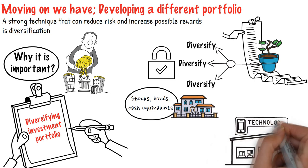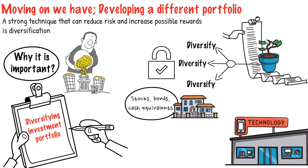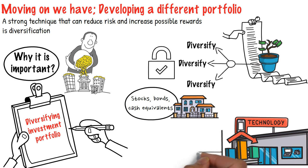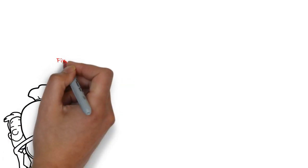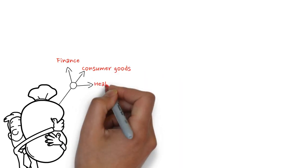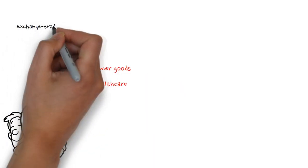Stocks, bonds, cash equivalents, and alternatives like real estate or commodities are among the primary asset groups. Each type has distinctive qualities and responds to market situations in a different way. If, for instance, all of your holdings are in technology stocks and the industry as a whole has a downturn, your portfolio may see significant losses. One can lessen exposure to sector-specific risks by spreading money across industries including finance, consumer goods, and healthcare.